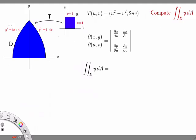So the region D is in the xy-plane here. It's bounded below by y equals 0 and then it's bounded by these two portions of parabolas: y squared equals 4 minus 4x and y squared equals 4x plus 4.